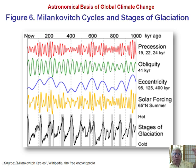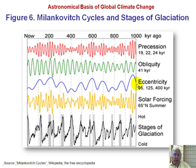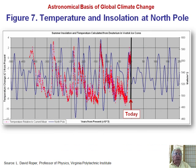The glaciers advance below and retreat above that latitude during ice ages. What we've been looking at is called stages of glaciation, but it's really the temperature. Here are the four peaks we've been discussing. Credit should be given to Milankovic for first pointing out that these are the important elements that must be considered in calculating solar forcing.